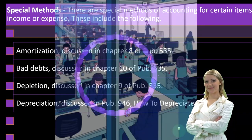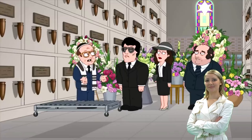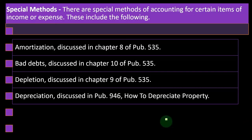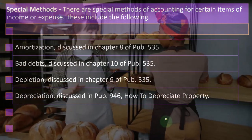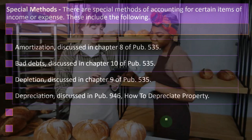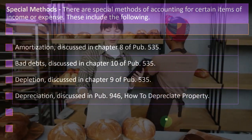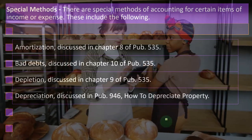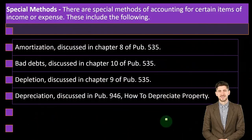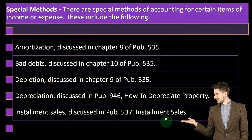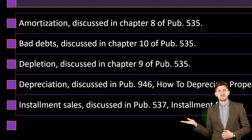Depreciation is discussed in Publication 946, 'How to Depreciate Property.' That's the one that most small businesses are probably going to be subject to, because that's what small businesses will likely need to deal with if they buy large pieces of equipment that should be going on the books as an asset, as opposed to simply expensing them when purchased.